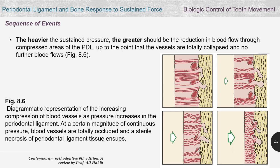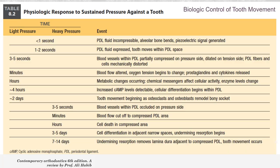The level of force also affects the response. If we apply heavy force, the reduction in blood flow will be higher and may be cut off completely, resulting in collapsed blood vessels, no blood flow, and complete necrosis in the area. This table explains the sequence of events during force application and how teeth will move, and we need to differentiate between light pressure versus heavy pressure scenarios.